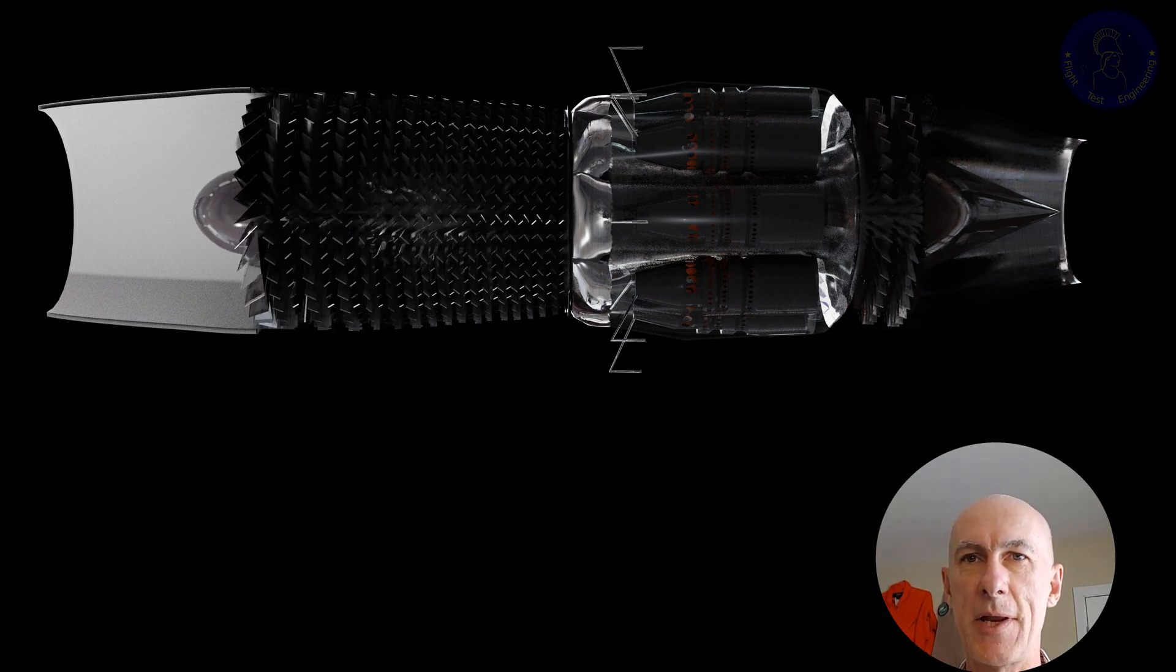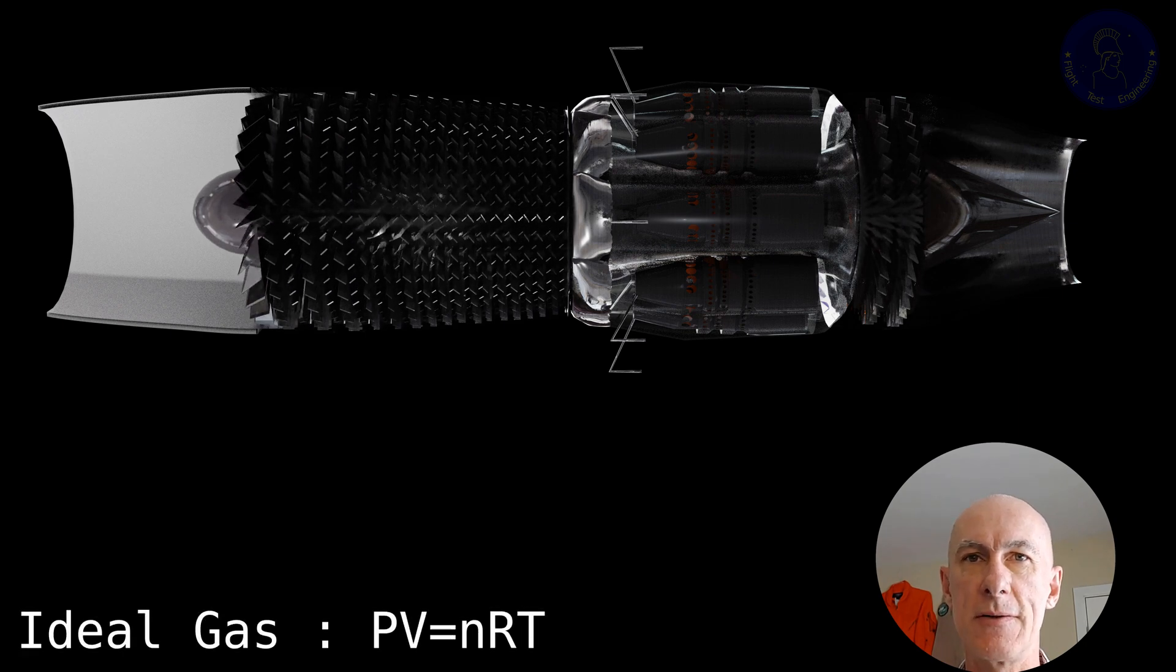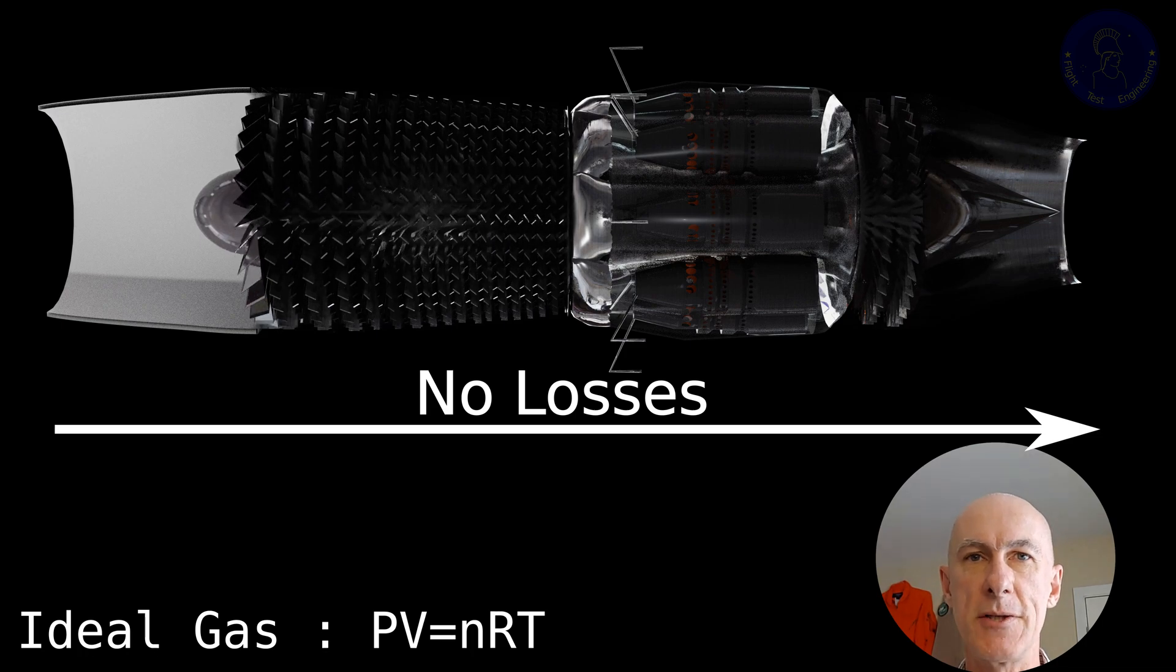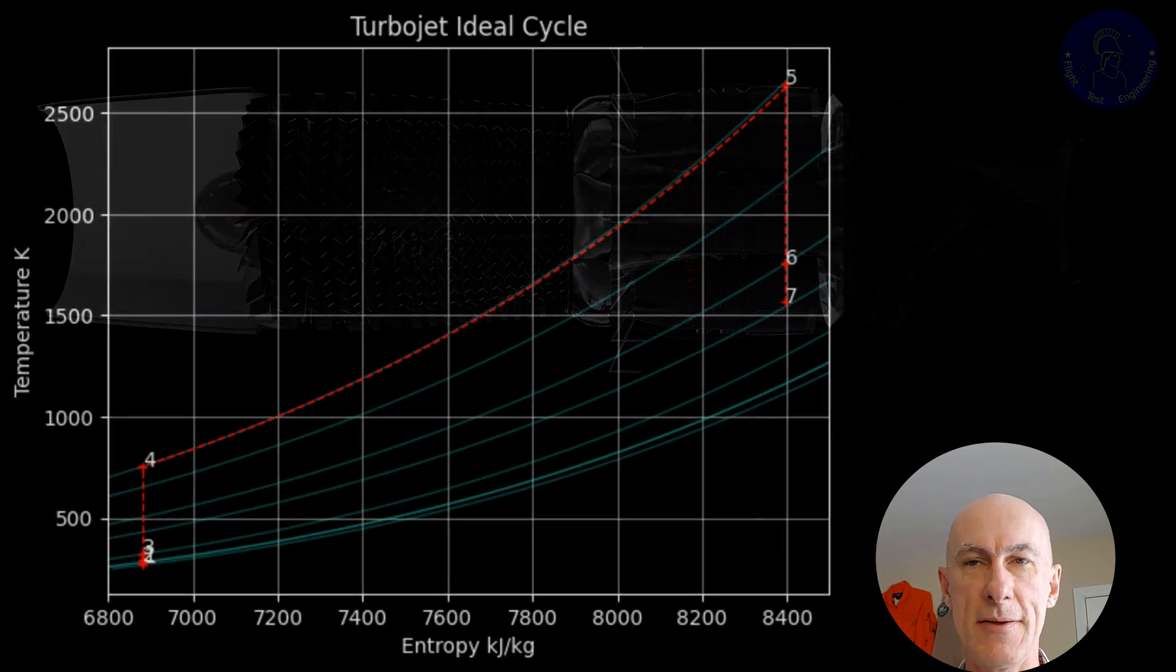When searching for jet engine thermodynamic cycles, most of the time we'll find a model that considers an ideal gas and no losses throughout the process, an isentropic machine. So for this absolutely ideal cycle, you'll often see a plot like this.